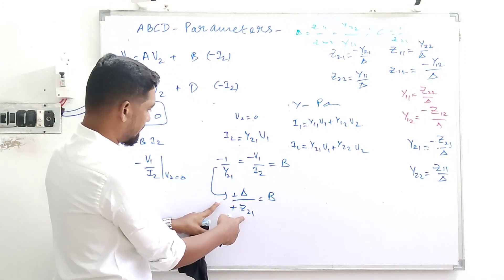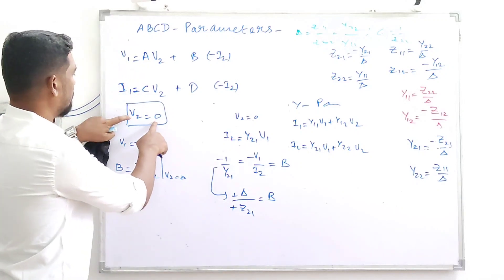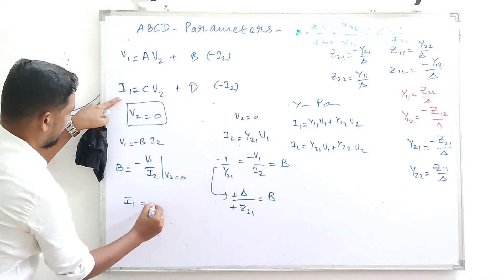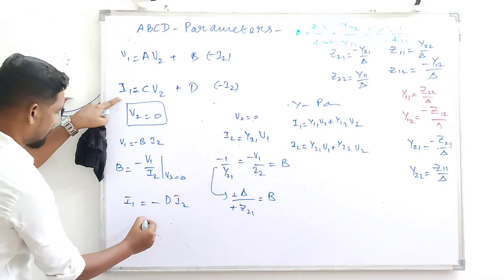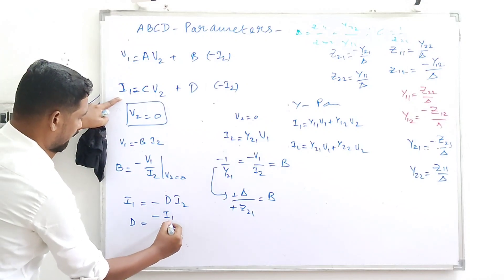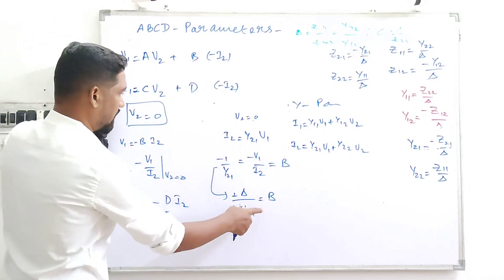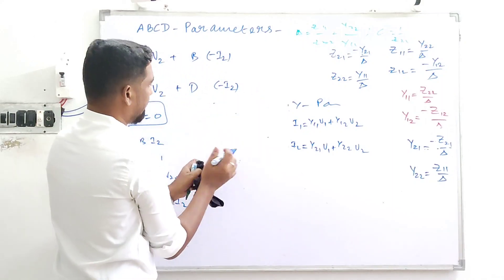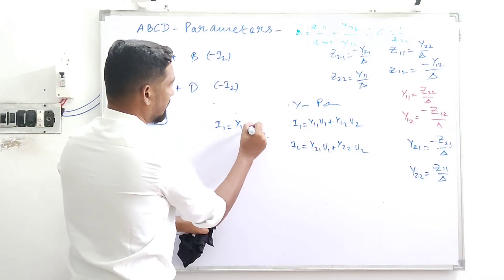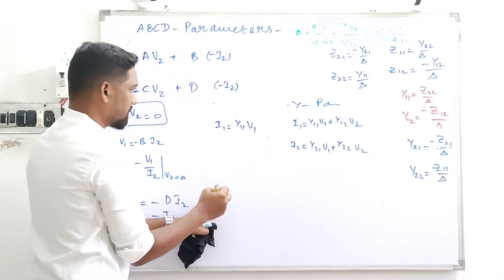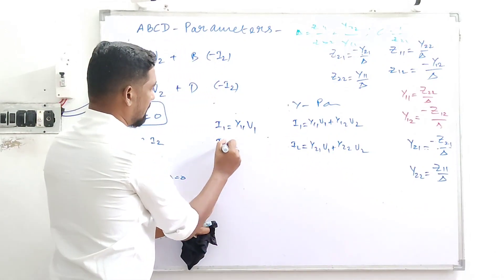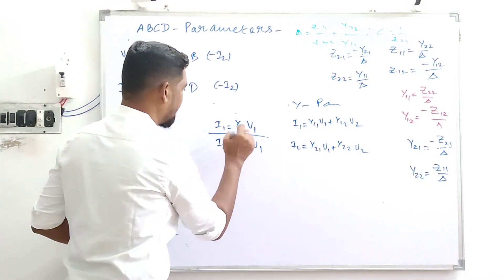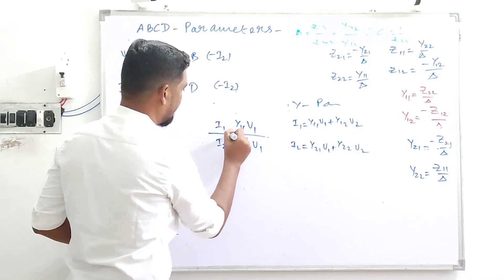With the same V2 = 0 condition, from the second ABCD equation: I1 = -D·I2, so D = -I1/I2 with V2 = 0. Applying V2 = 0 to the Y equations: from the first, I1 = Y11·V1, and from the second, I2 = Y21·V1. So I1/I2 = Y11/Y21, and V1 cancels out.